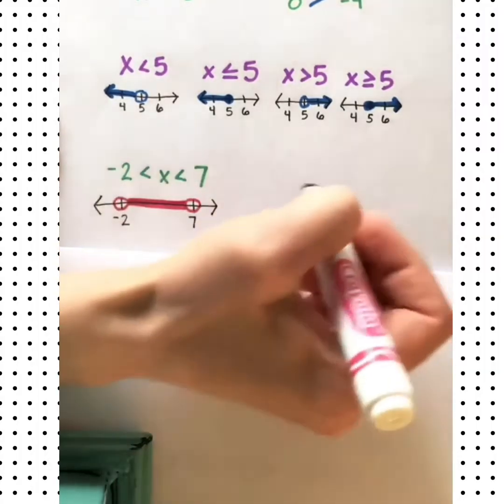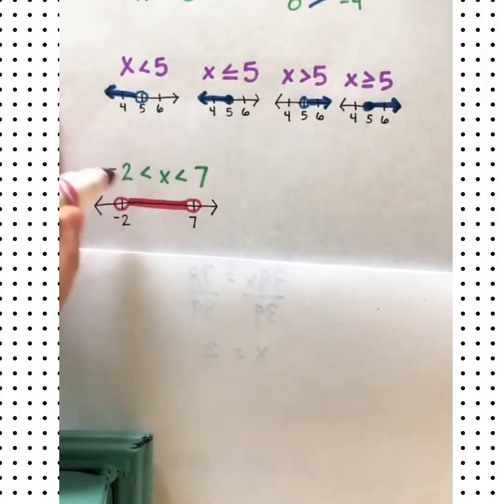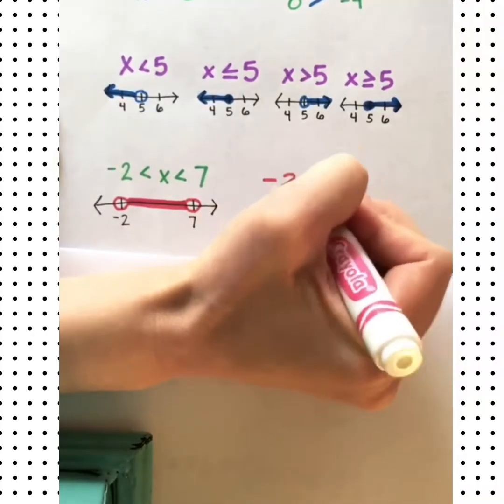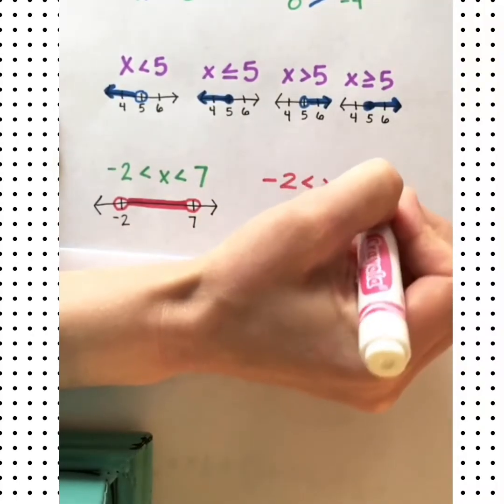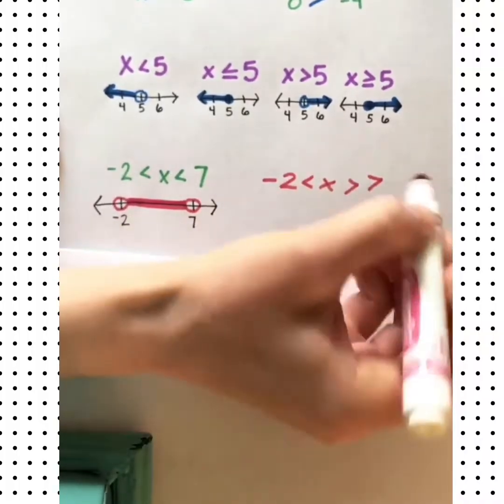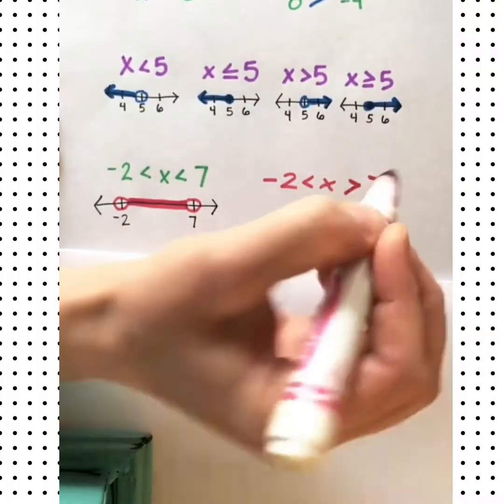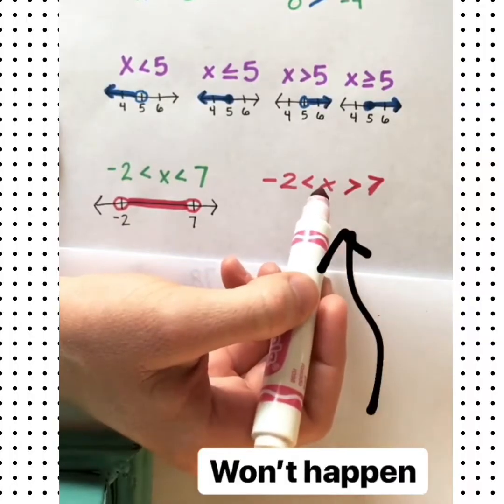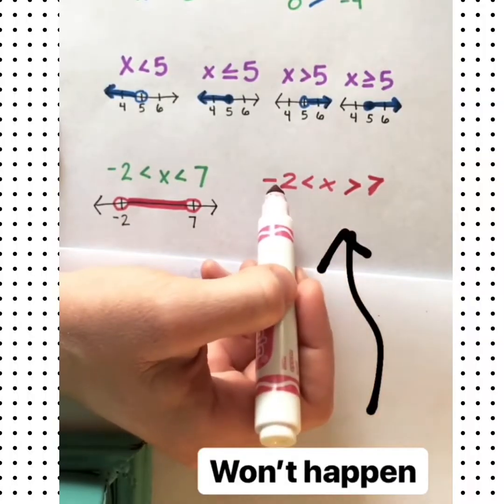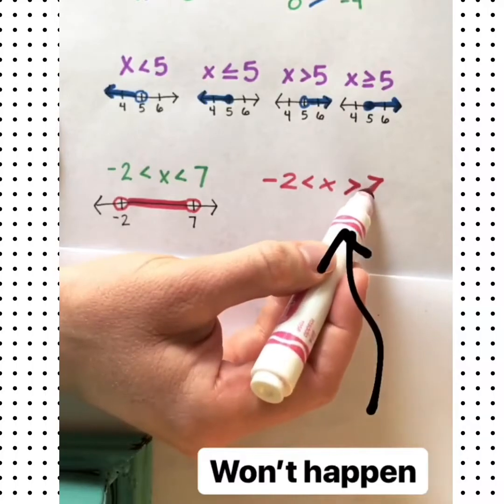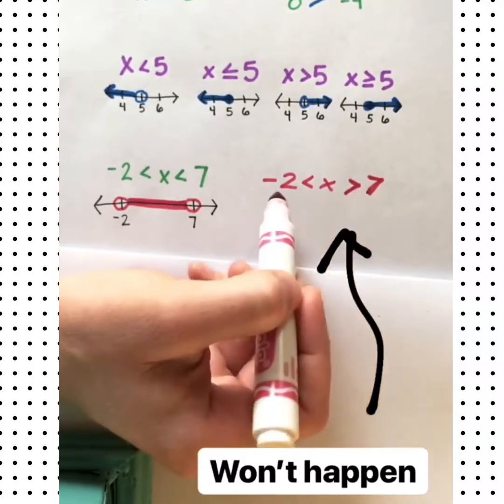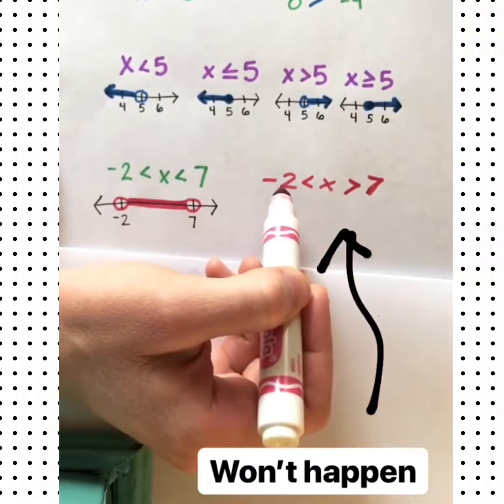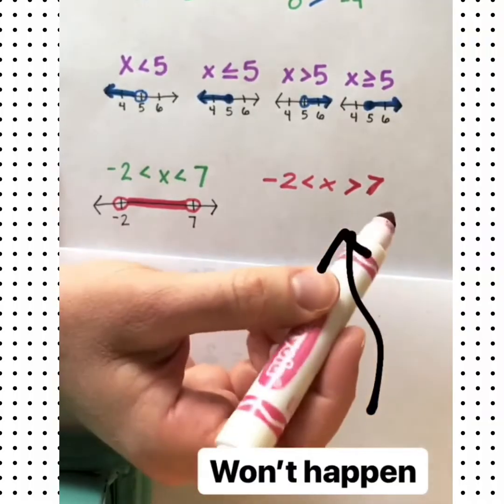One thing to note, you will never see a compound inequality in this format. You won't see the signs pointing different ways. That doesn't make sense. If x is greater than negative 2 and x is greater than 7, then you don't even need this part because if x is greater than 7, it's already greater than negative 2. So just something to watch out for.